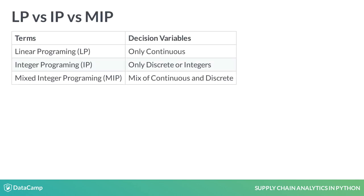In our example, our decision variables were the number of push-ups and miles ran. We modeled them as continuous variables, meaning the optimal result could mean performing 0.5 push-ups or 0.1 of a mile. The continuous nature of the decision variables makes this a linear programming problem. If push-ups and miles ran could only be whole numbers, then this becomes integer programming. If we combine the two, it is mixed integer programming.